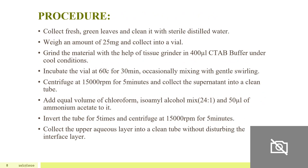For the procedure: take fresh green leaves, clean with sterile water, weigh 25 mg, and collect into a vial. Grind the leaf material with a tissue grinder in 400 ml CTAB buffer under cool conditions. Incubate the vial at 60°C for 30 minutes with occasional gentle swirling. Centrifuge at 15,000 rpm for 5 minutes, collect the supernatant into a clean tube, and add equal volume of chloroform-isoamyl alcohol mixture at 24:1 ratio plus 50 µl of ammonium acetate. Invert the tube for 5 minutes and centrifuge again at 15,000 rpm for 5 minutes.